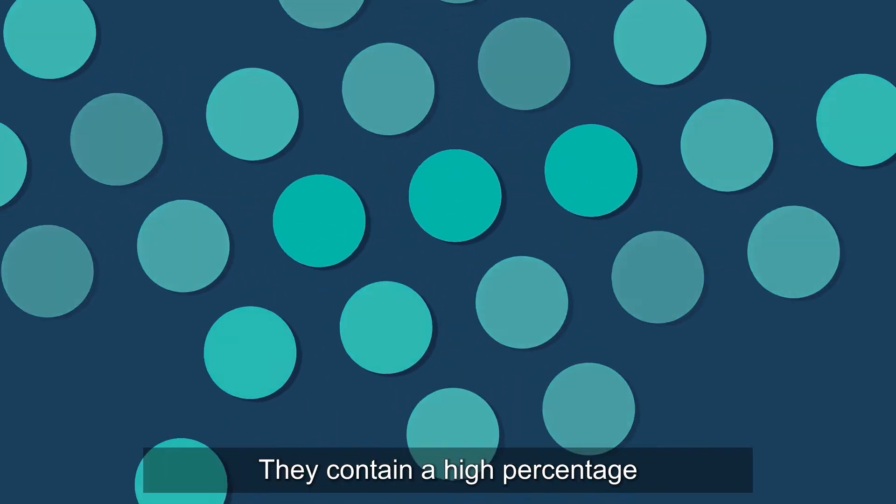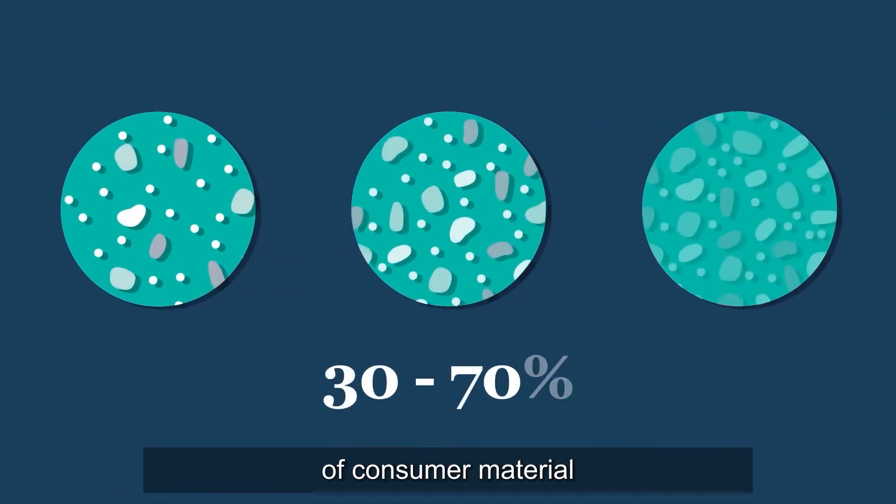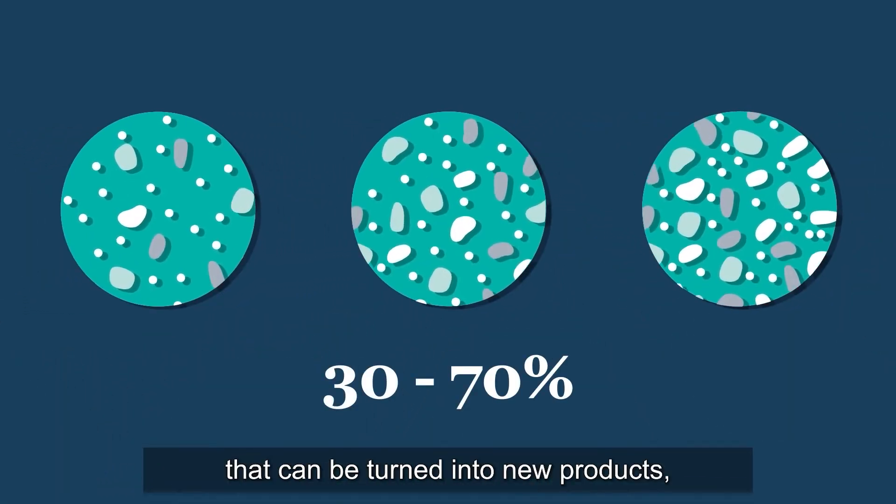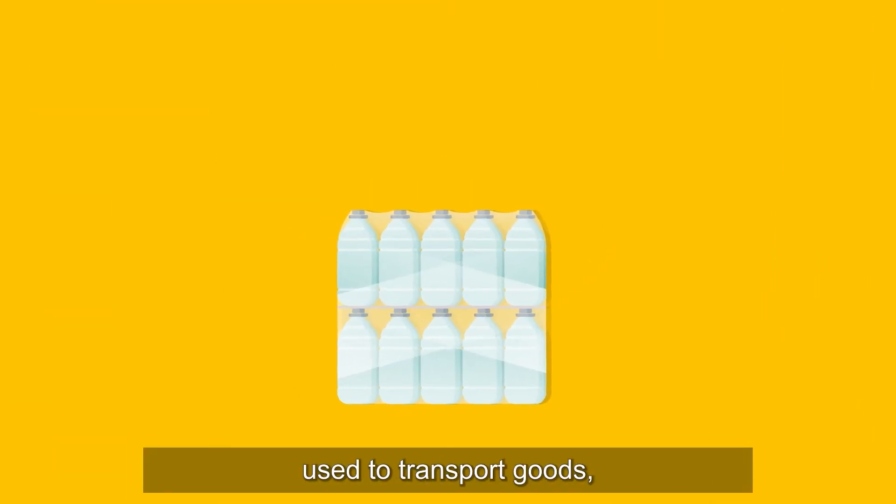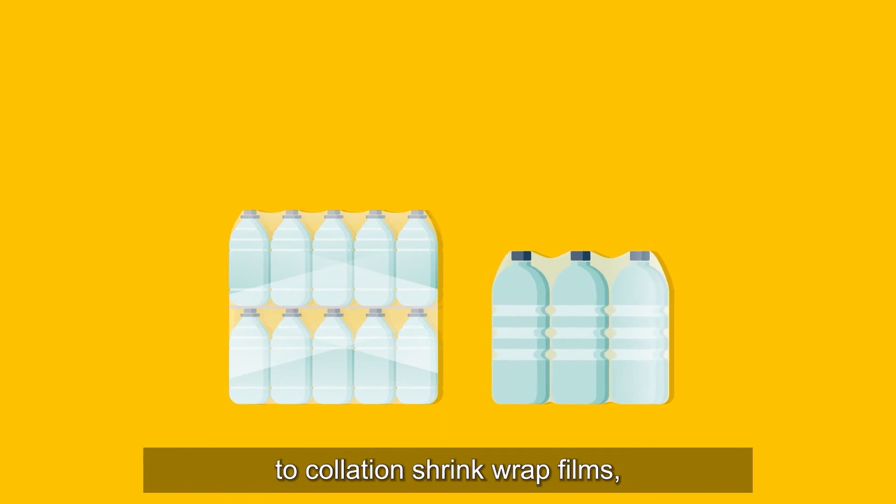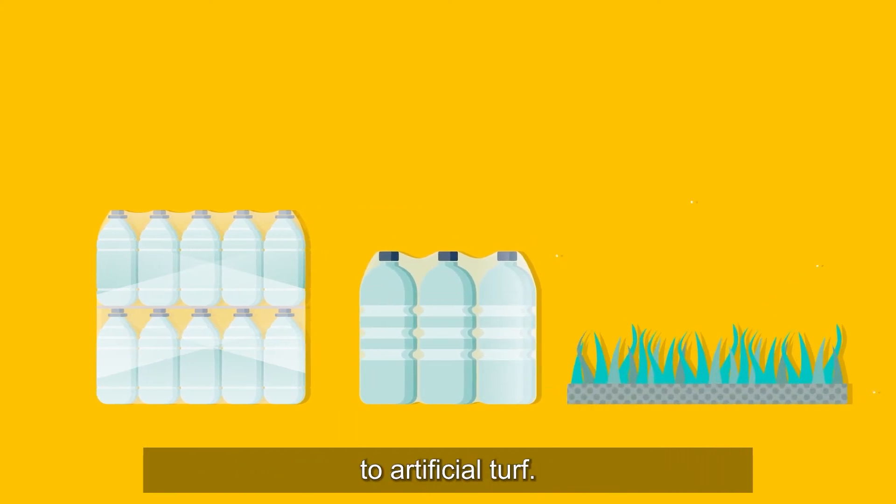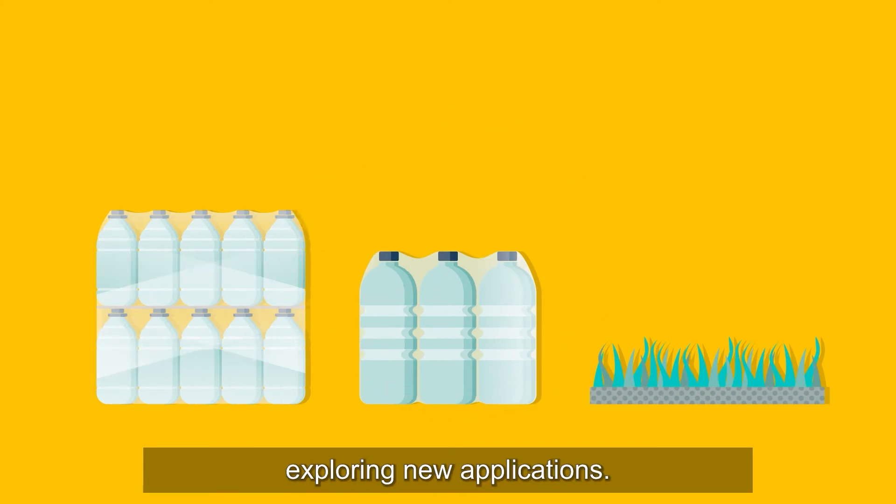They contain a high percentage of consumer material that can be turned into new products. From stretch wrap films used to transport goods to chelation shrink wrap films to artificial turf. And we're continually exploring new applications.